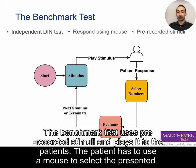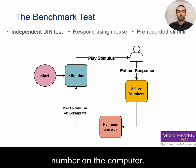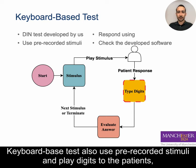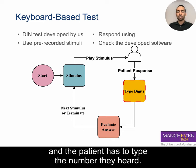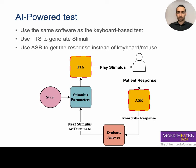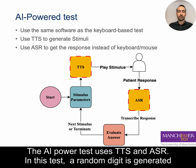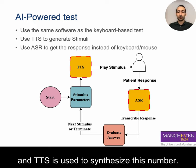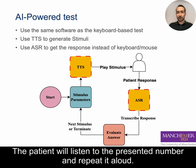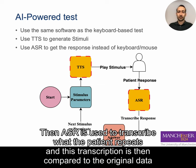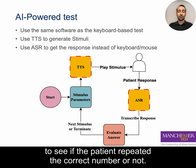The benchmark test uses pre-recorded stimuli played to the patient; the patient uses a mouse to select the presented number on the computer. The keyboard-based test also uses pre-recorded stimuli, and the patient types the number they heard. The AI-powered test uses TTS and ASR — a random digit is generated, TTS synthesizes the number, the patient listens and repeats it aloud, and then ASR is used to transcribe what the patient repeats.